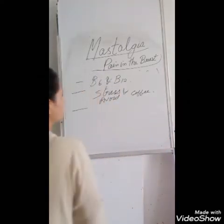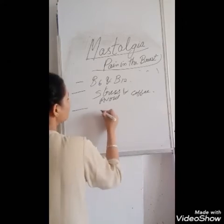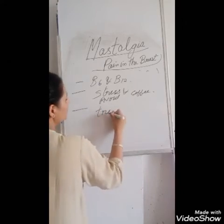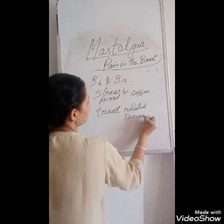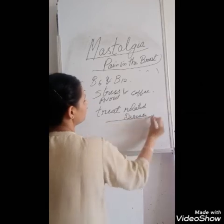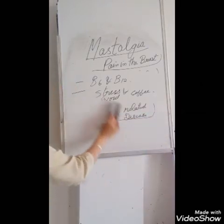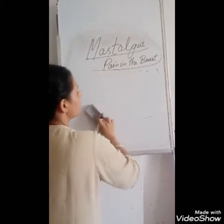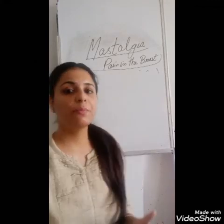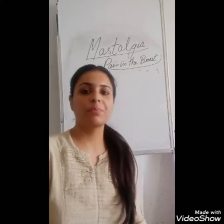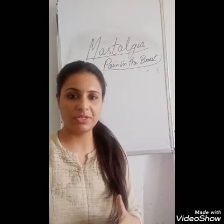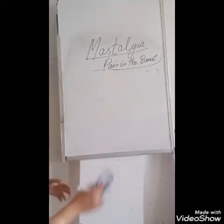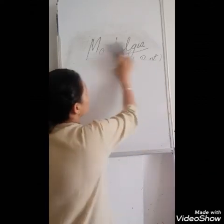The third type is chest wall mastalgia. If posture is not properly maintained, or if there is some injury or trauma in the underlying muscles, that could be the reason for pain. These were the causes for mastalgia — that is, the pain in the breast.